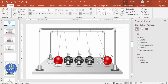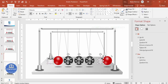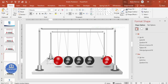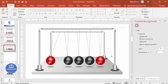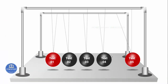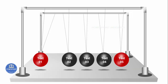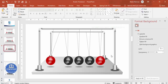Select all text boxes, press Ctrl+C to copy, go to the next slide, and press Ctrl+V to paste. Arrange the labels properly for the left, center, and right sphere positions on that slide. Once positioned, run the slide show and use the down and up arrow keys to see the complete kinetic pendulum animation in PowerPoint.